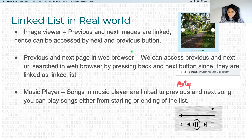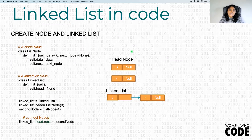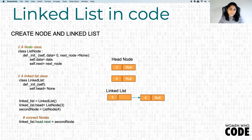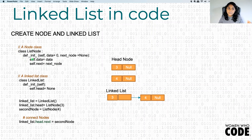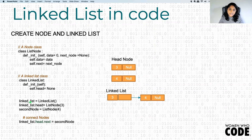Now let's look at some syntax of how linked lists are represented in code. Here is a class with a constructor for creating a node. This piece of code is in Python. The constructor helps you create a node object. And this is the constructor for a linked list that helps create a linked list object. Here, I have created a linked list by calling this function and have the linked list object ready — it's called link-list here.